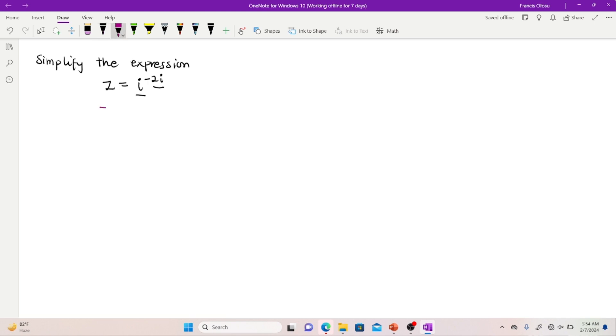So we have z is equal to i to the power negative 2i. The first step in simplifying logarithm of complex numbers is to apply logarithm on both sides so that we bring the complex number, which is the exponential complex number down.